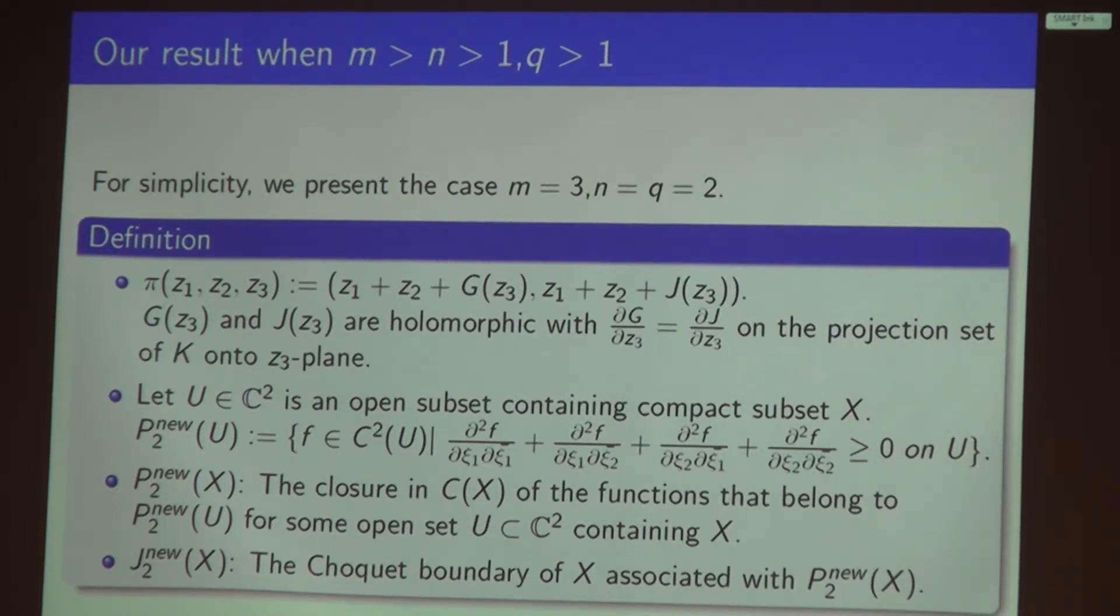G and J are holomorphic functions with one complex variable on the C³ complex plane with dG/dz₃ equal to dJ/dz₃ on the projection set of K onto the C³ plane. A short comment: generically G and J should differ by a constant if your K projection set onto the C³ plane has accumulation points by one complex variable. But it really depends on your compact set K. If the projection set does not have any accumulation point, then G and J could be completely different.